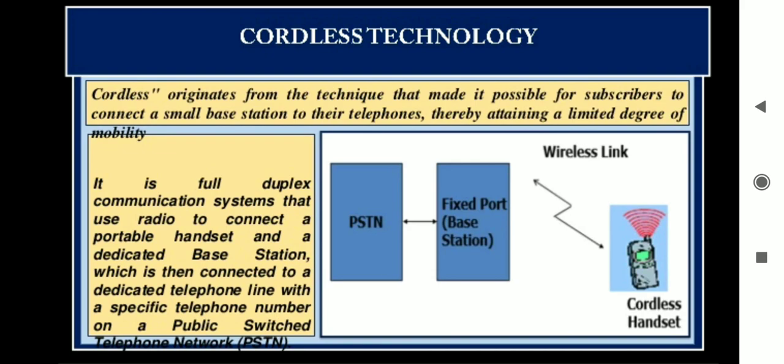When you talk, the handset broadcasts your voice through a second FM radio signal back to the base. The base receives your voice signal, converts it to an electric signal, and sends it through the phone line. The base and handset operate on a frequency pair that allows you to talk and listen at the same time — this process is called duplex frequency.